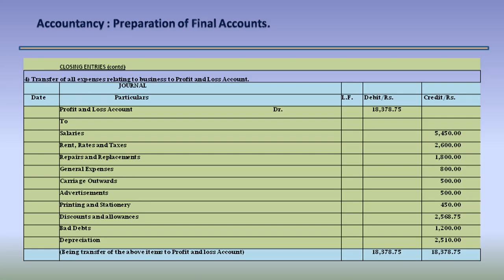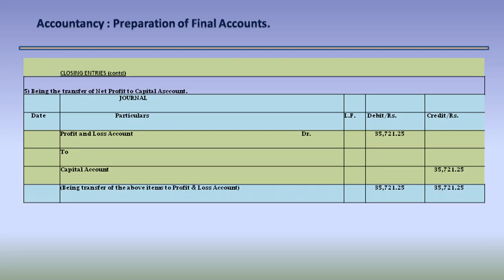Closing entry 4: transfer all expenses relating to business to profit and loss account. Profit and Loss Account Dr. 18,378.75 — to Salaries 5,450, Rent Rates and Taxes 2,600, Repairs and Replacement 1,800, General Expenses 800, Carriage Outwards 500, Advertisements 500, Printing and Stationery 450, Discount on Debtors 2,568.75, Bad Debts 1,200, Depreciation 2,510. Being the transfer of the above items to profit and loss account. Closing entry 5: Profit and Loss Account Dr. 35,721.25 to Capital Account 35,721.25 — being the transfer of net profit to capital account.